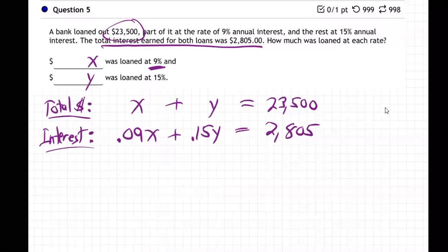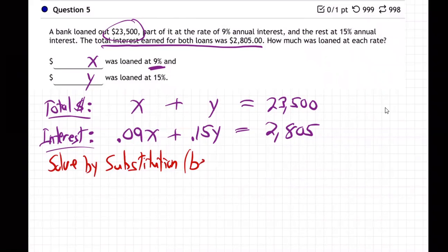Okay, now we need to solve these two equations. How are we going to do it? Well, I think the easiest thing to do would be substitution. So I'm going to solve by substitution because X has no number, right? There's no number right here in front of that X. So that makes it easy. So just get X alone there.